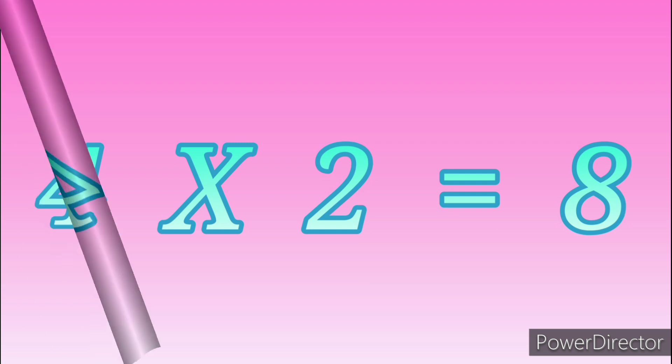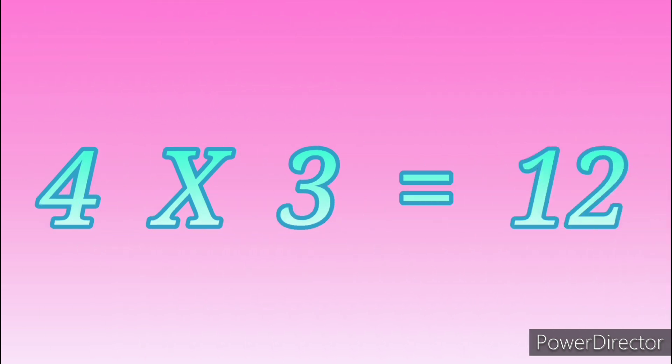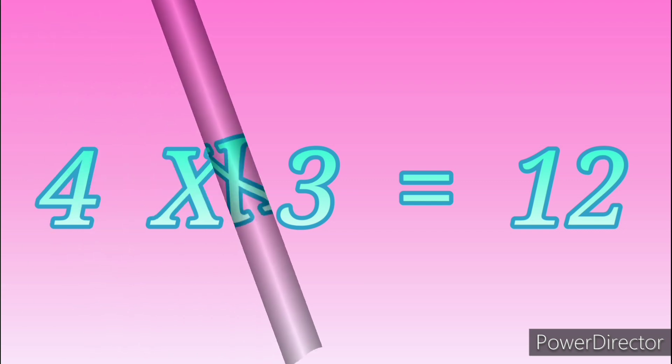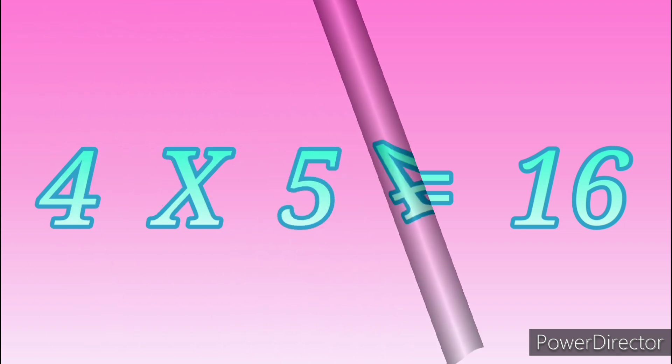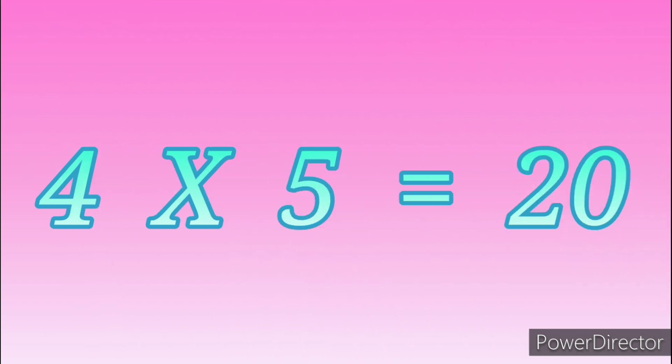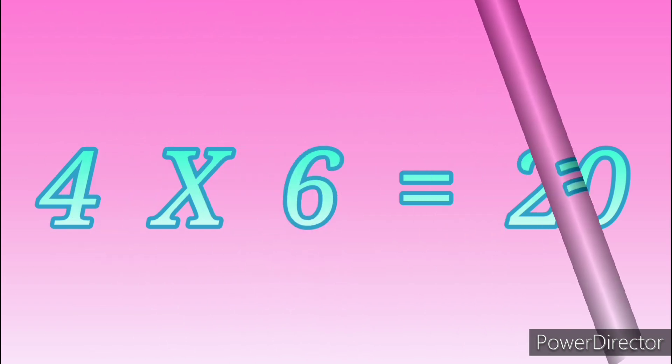4 threes are 12, 4 fours are 16, 4 fives are 20, 4 sixes are 24.